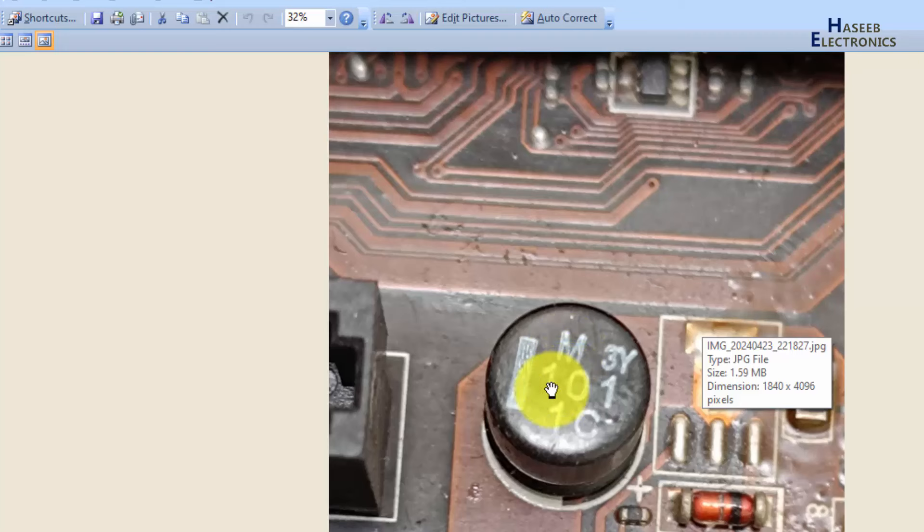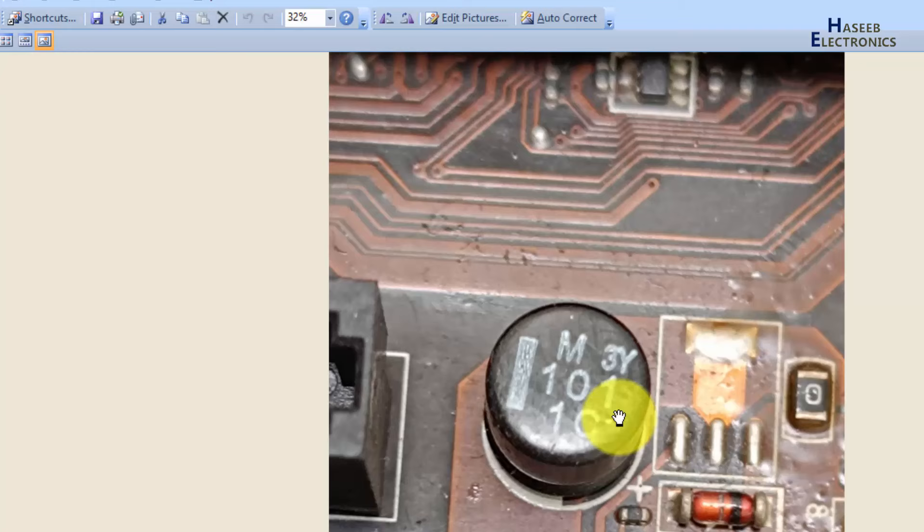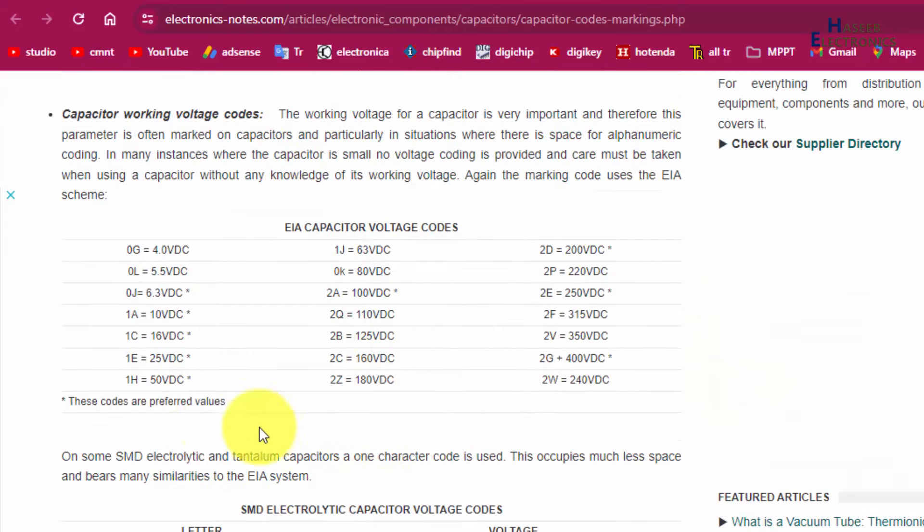1C is 16 volt. It is EIA capacitor voltage code. If you enjoyed this video, give a thumbs up. If you have any question, please write in the comments. Thanks for watching.